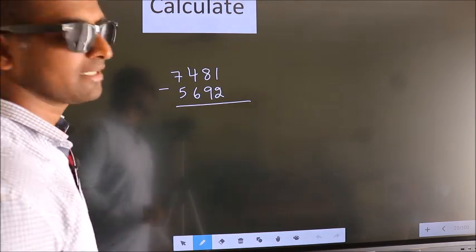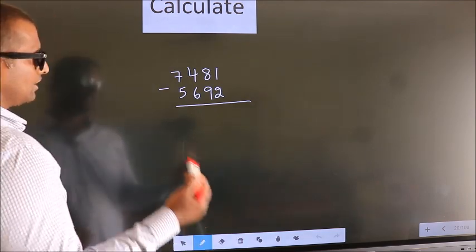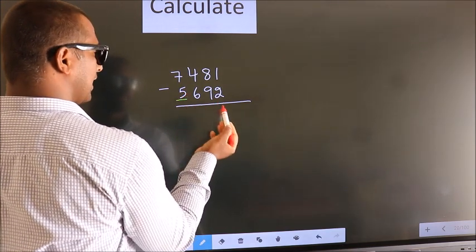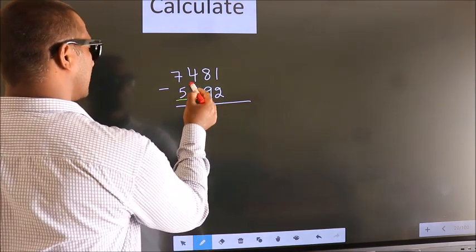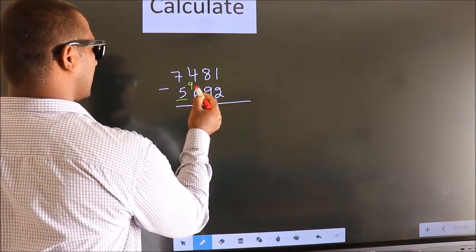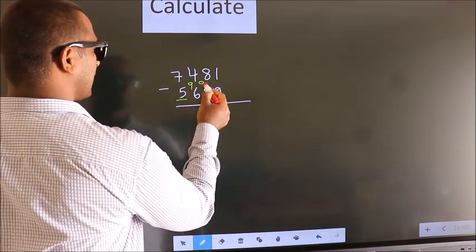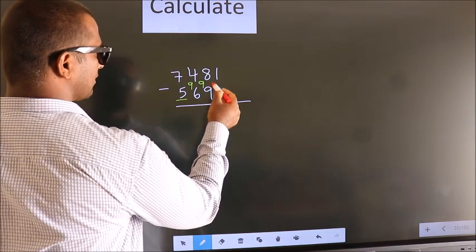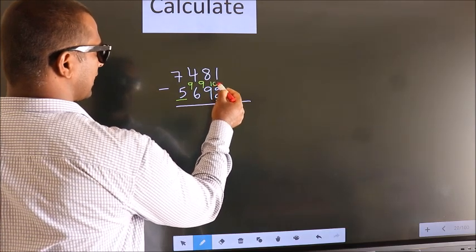See, we should leave the first digit, and here we write 9, here 9, and for the last digit we write 10.